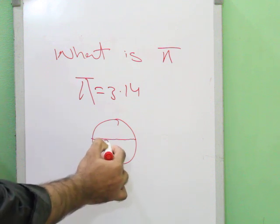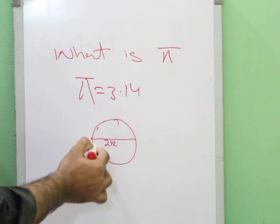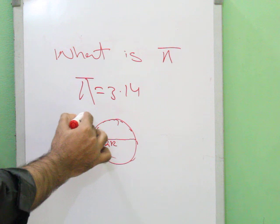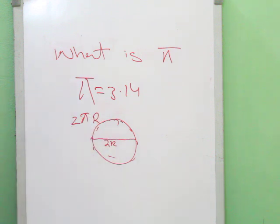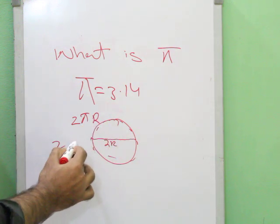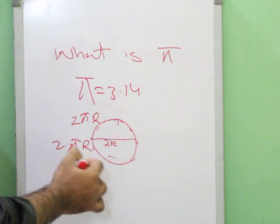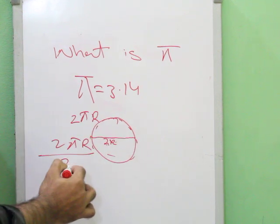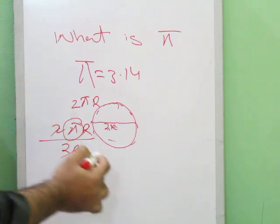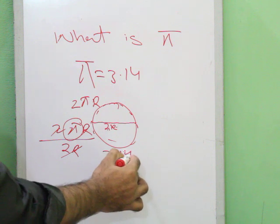The diameter is represented by 2r, and the circumference of a circle is equal to 2πr. It has been noted that for any circle — take the Sun, take a small circle, or take anything — when we divide the circumference of a circle, 2πr, by its diameter, 2r, we get a specific value which is always 3.14.